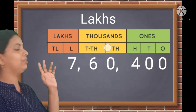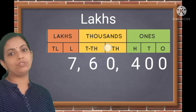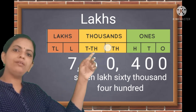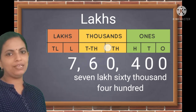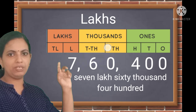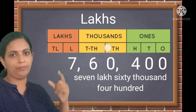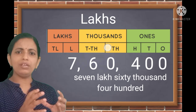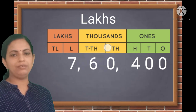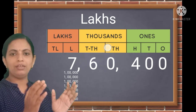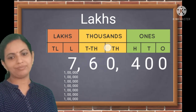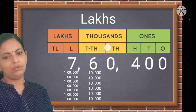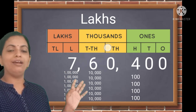Let's read another number I wrote here: seven lakh, sixty thousand, four hundred. You can see the places — seven is in the lakhs place, sixty is in the thousands period. We know in each period we have to read the numbers together: sixty thousand, four hundred. The place value of seven shows there are seven lakhs; the six in the ten-thousands place shows there are six ten-thousands; and the four in the hundreds place shows there are four hundreds.